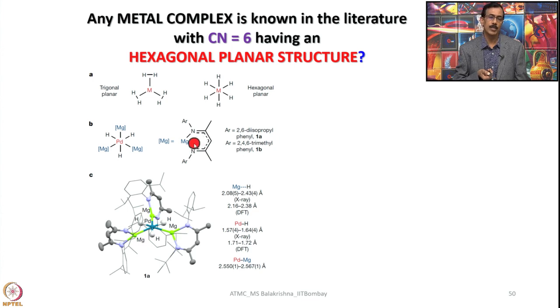And here one interesting thing is they have made a magnesium complex this is a monoanionic. So magnesium still has one electron to donate and now 3 such bulky groups are attached to palladium in this fashion and in between we have 3 hydrogen atoms.